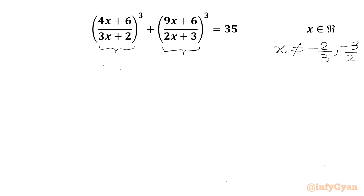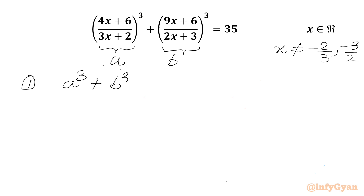Now I will consider our first bracket as a and this bracket we will call b. So the very first equation we can write will be a cube plus b cube equal to 35.